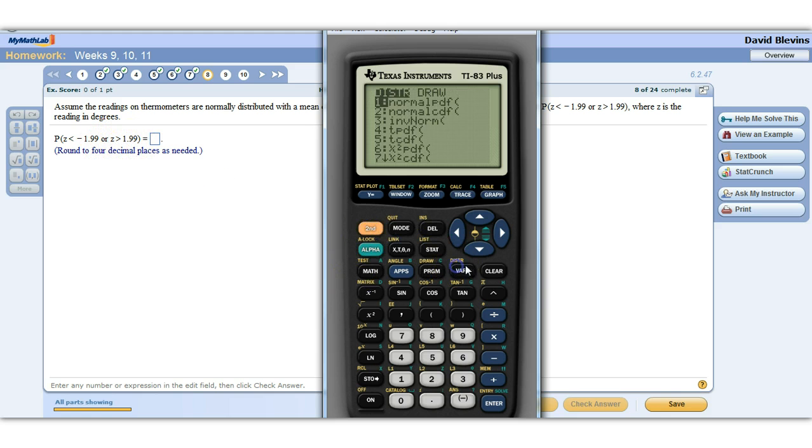Then to that, the or, remember in probabilities the or means we're adding it literally. Z is greater than 1.99, now we're going to do the other side. Normal cdf, we're going to do 1.99, and now we're going to stop at positive 10.